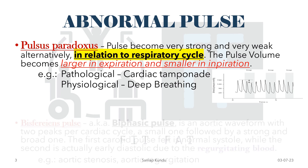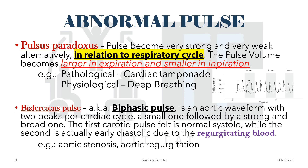The final abnormal pulse is bisferiens pulse, also known as biphasic pulse — an aortic waveform with two peaks per cardiac cycle: a small one followed by a strong and broad one. The first carotid pulse is felt in normal systole, while the second is actually early diastolic due to regurgitation of blood. It is seen in aortic stenosis and aortic regurgitation.